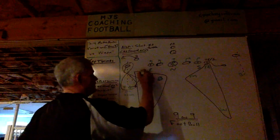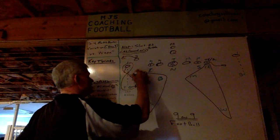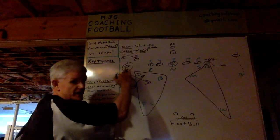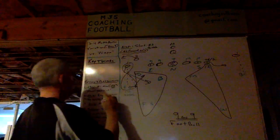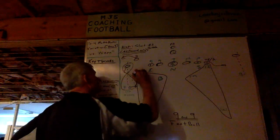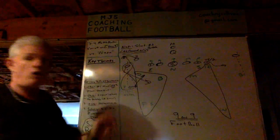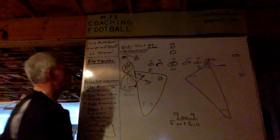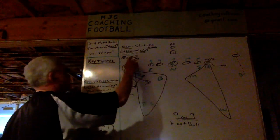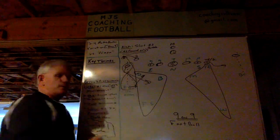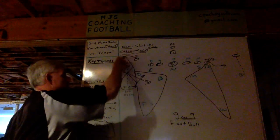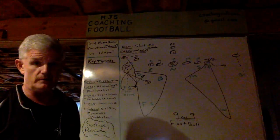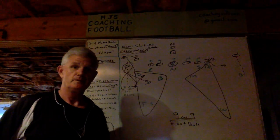Now the outside linebacker — same thing, surface. He's expanding, eyes on two. Now instead of his eyes going to one, his eyes go directly to two. What's meant by chase the bubble — he's going to literally go aggressively up the field and chase the bubble. He's got number two man. So if this were to be a pump and become a wheel, the outside linebacker is going to carry that wheel. That's what that means.